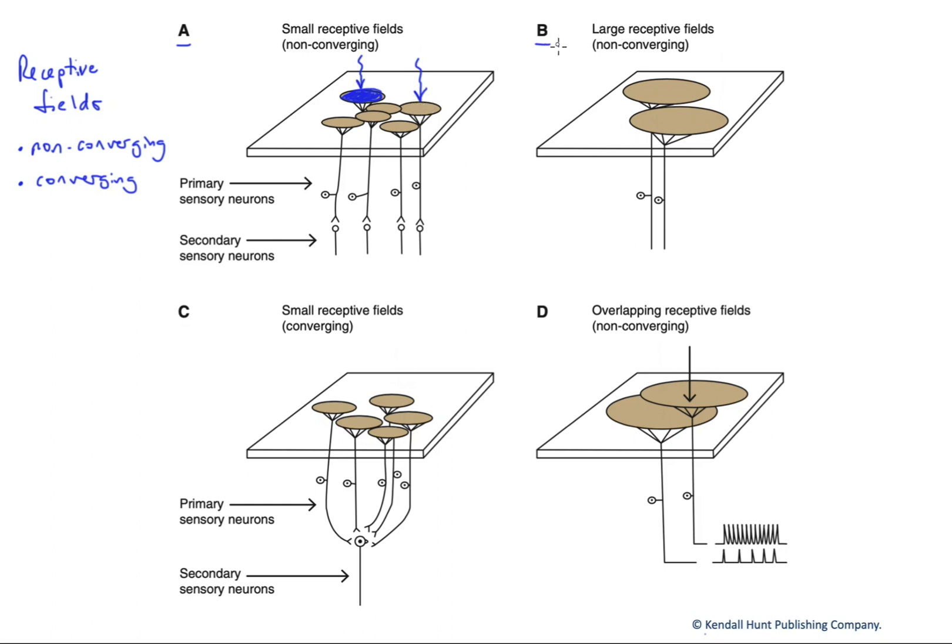If we come over here into B, we have much larger receptive fields now. They're again non-converging. But what this means is that a stimulus that arrives and hits this neuron here and a separate stimulus that hits the same receptive field over to the right, we can't tell the difference. They're about equidistant as they were in A. The stimuli are about the same distance apart, but in this case, they were both stimulating the same neuron. They will be processed as a singular point of input. We won't be able to tell that these are two separate stimuli. So large receptive fields tend to reduce our point discrimination.